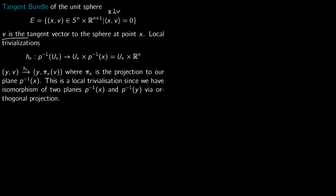Now we have to talk about local trivialization conditions. For local trivialization you first pick a point X and then pick a neighborhood U of X. Notice that the projection map is natural: you project down to the sphere by taking the X component. So the projection map goes from E to S^n.